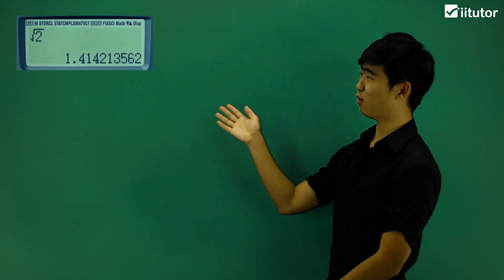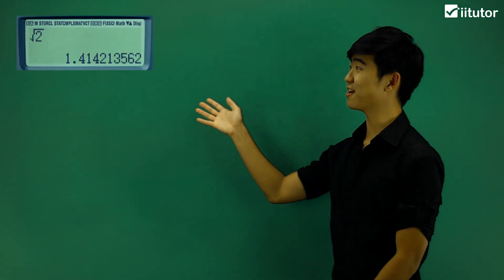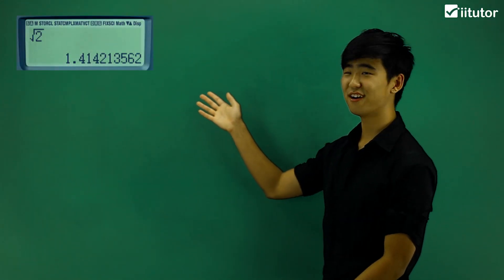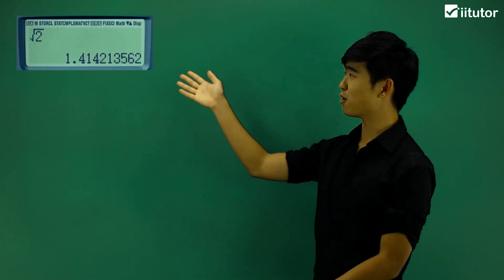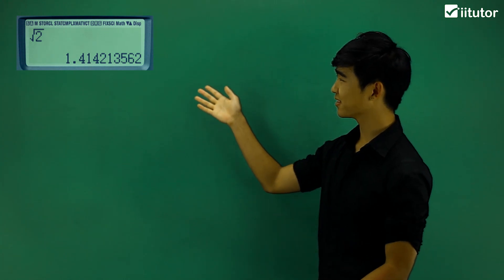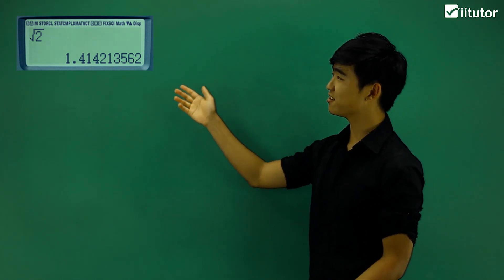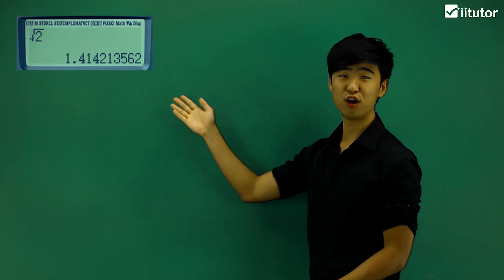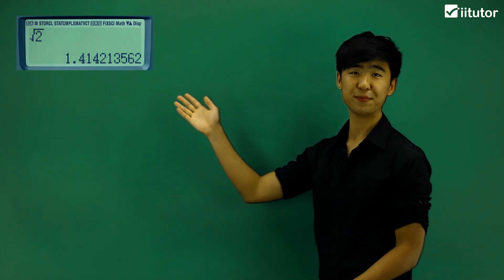Alright, let's take a look at what I have here in my calculator. I have the square root of 2, and I just press enter, and I have this long decimal number.